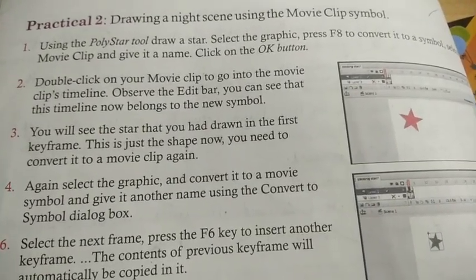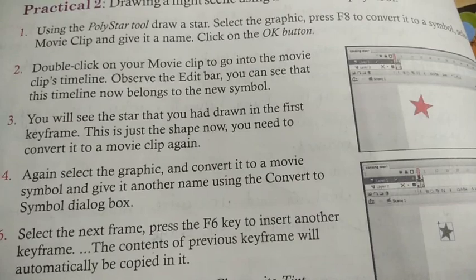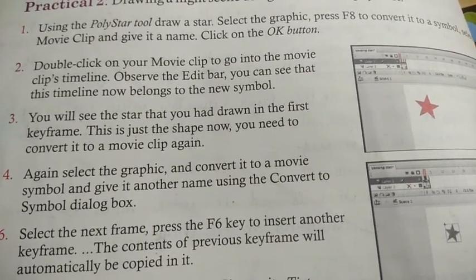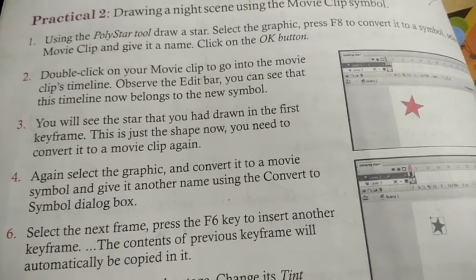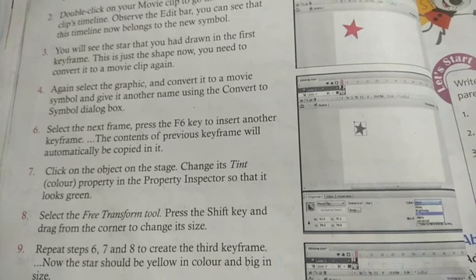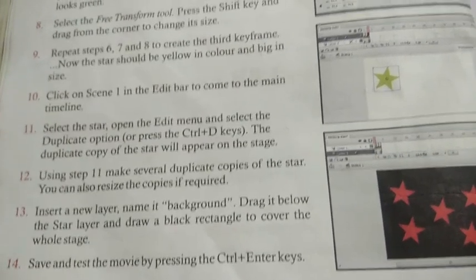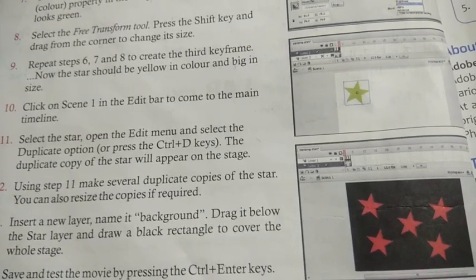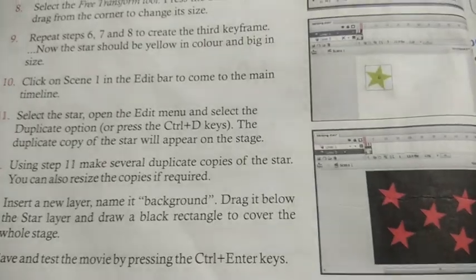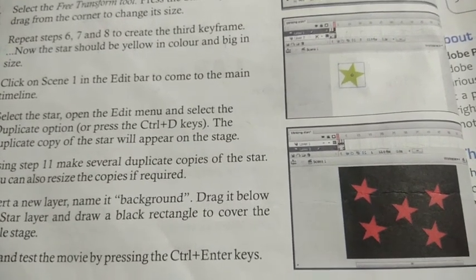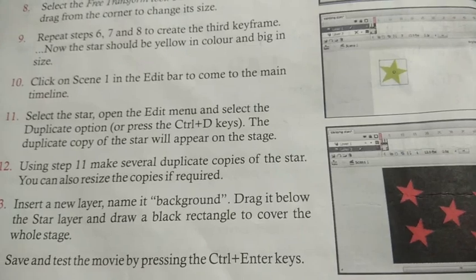Practical number two: drawing a night scene using the movie clip symbol. Using the poly star tool, draw a star and use the graphic type to convert it to a symbol. Follow the movie clip steps, give it a name, then click OK. Follow all the steps one by one — draw and color the stars properly to make a night scene.